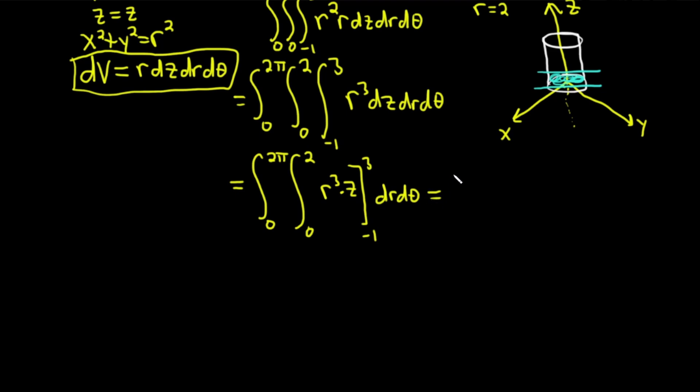This is equal to integral from 0 to 2 pi, the integral from 0 to 2. So plug in 3, subtract, and then plug in negative 1. So we're going to get, basically, r cubed, parentheses, 3 minus negative 1, right? So it's plus 1. But I'll write it as minus negative 1, so there's no missing steps. And then we have dr, d theta.